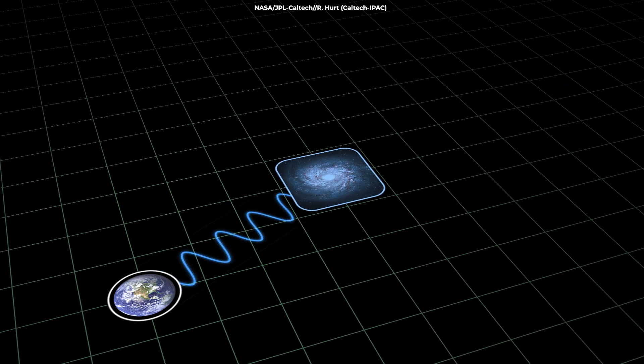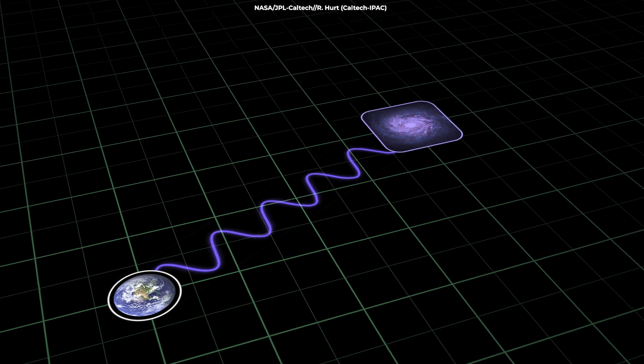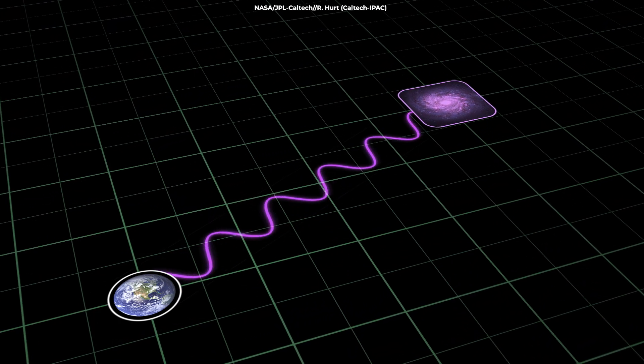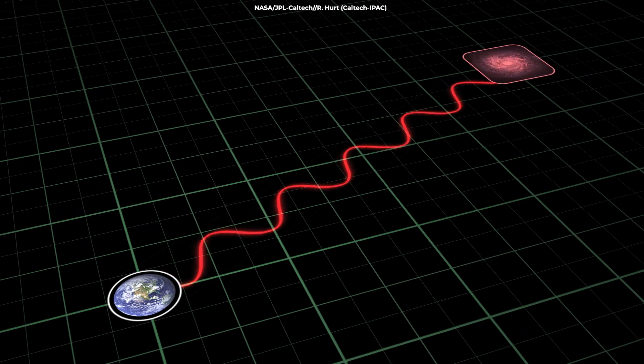As this light travels vast distances across the expanding universe, it undergoes redshift, stretching from visible wavelengths into infrared and even longer wavelengths as it loses energy over time.